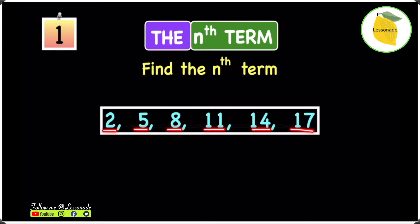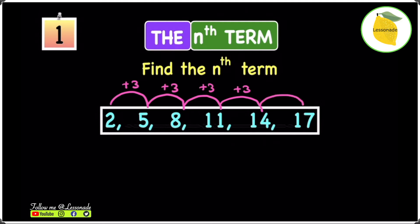The first thing we have to know is by how much the sequence is increasing or decreasing. To get from 2 to 5 you add 3, from 5 to 8 you add 3, from 8 to 11 you add 3, from 11 to 14 you add 3, and from 14 to 17 you add 3. So this sequence is progressing by adding 3 each time.